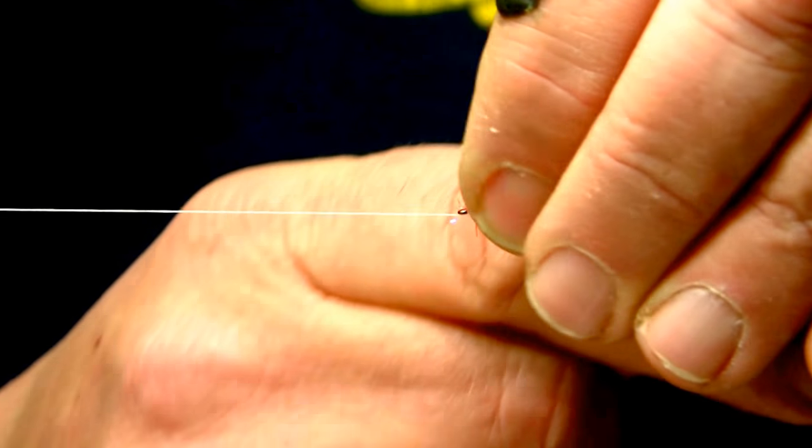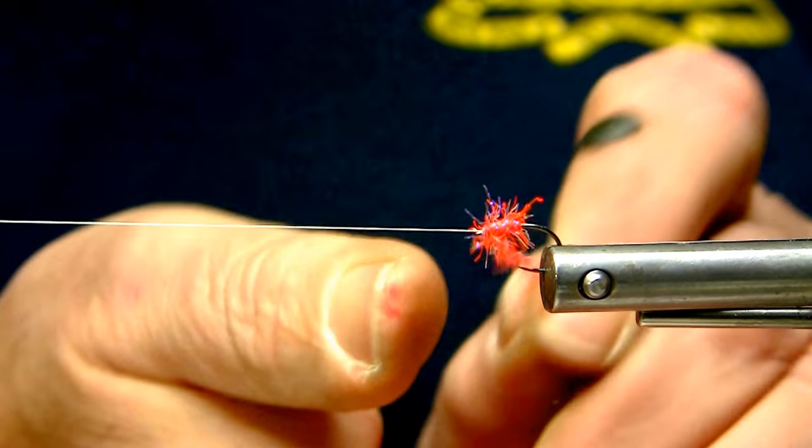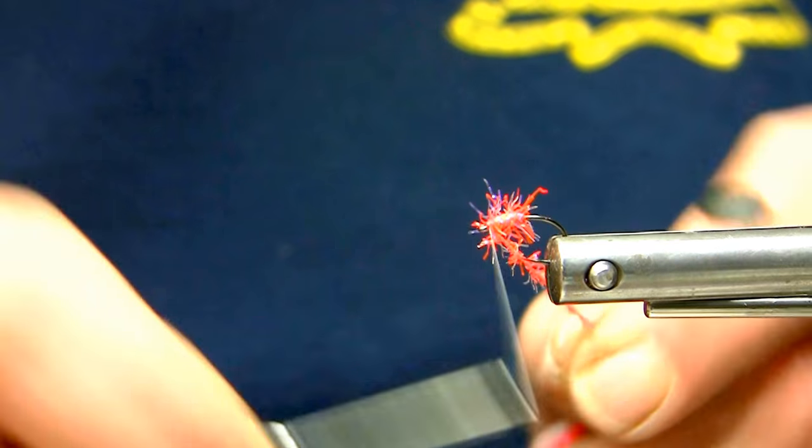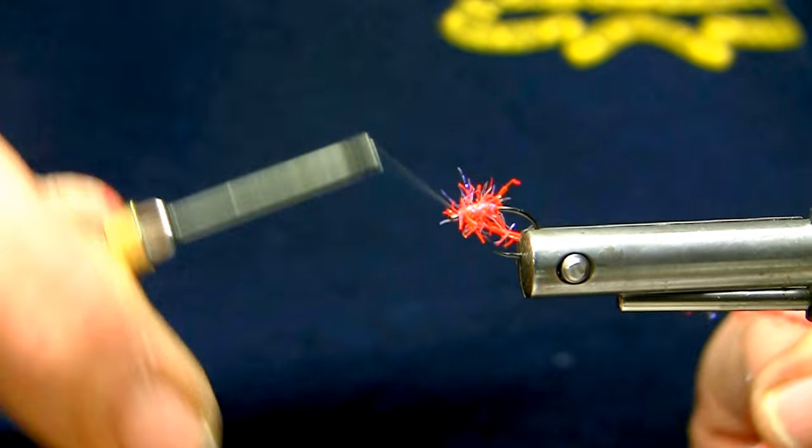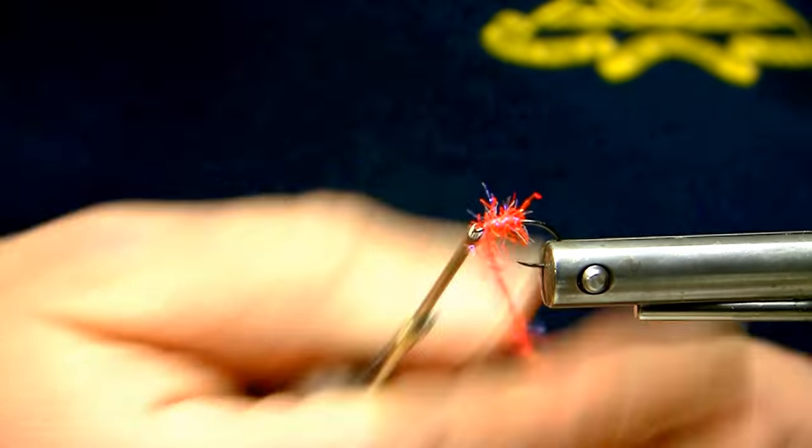Coming around the front, the micro straggle behind the hook eye. And now we'll just tie off the micro straggle. This is a simple and easy pattern.